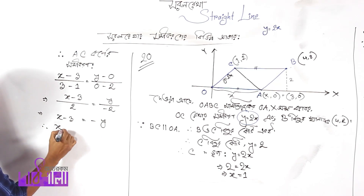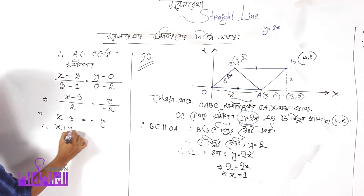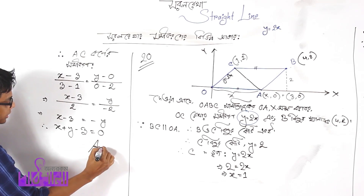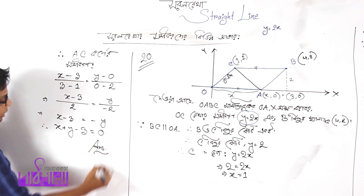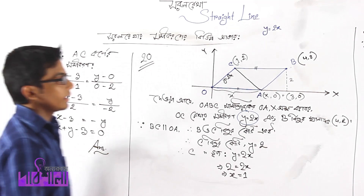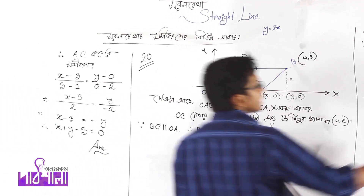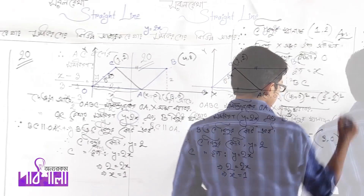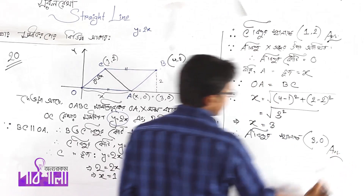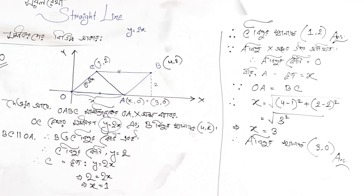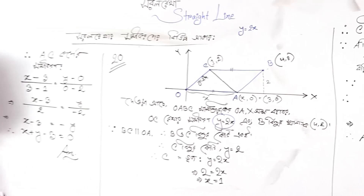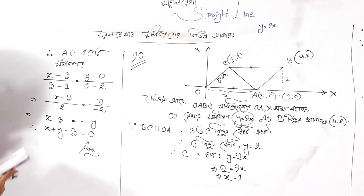3 equals to minus y. x plus y minus 3 equals to 0. So we have to solve this. A has to solve this. C and A has to solve this. And the last answer is x plus y minus 3 equals to 0.